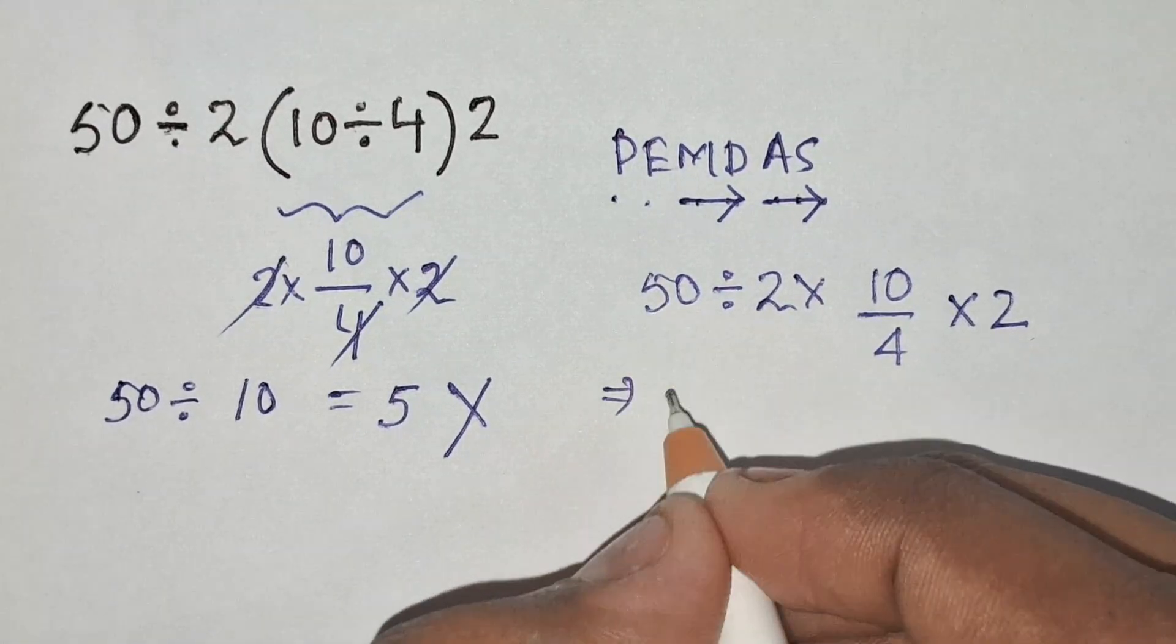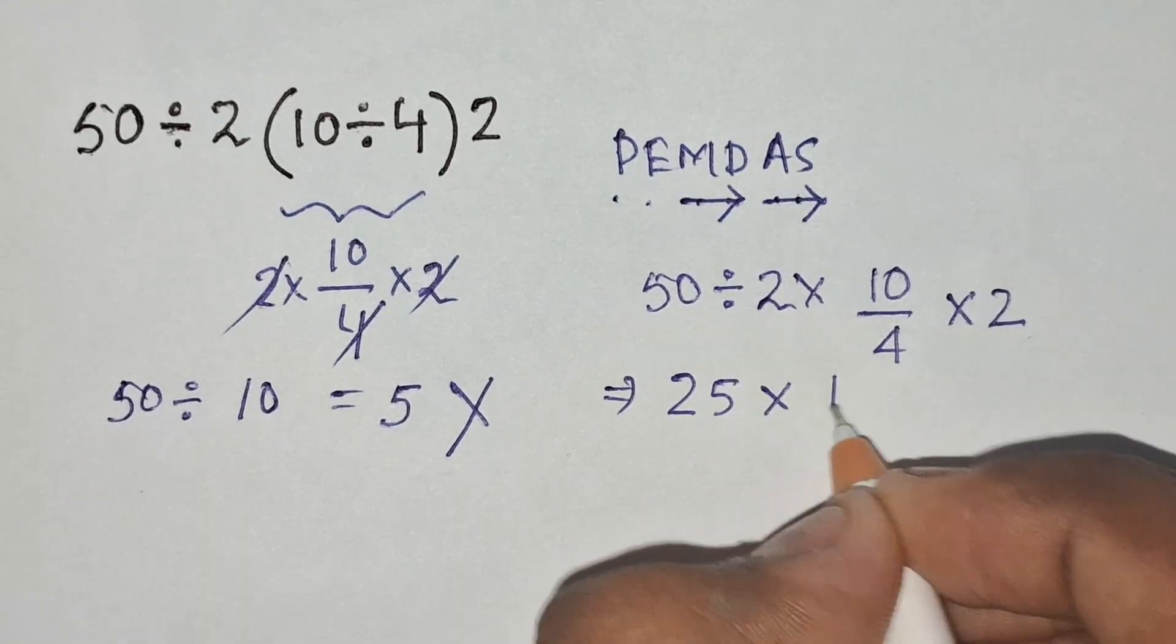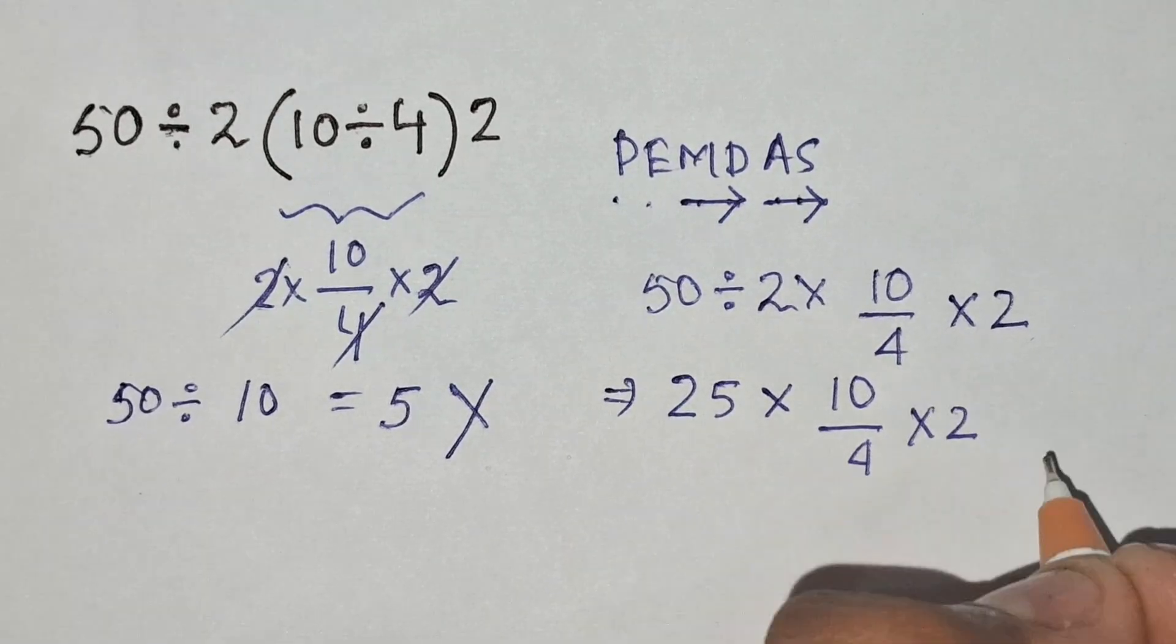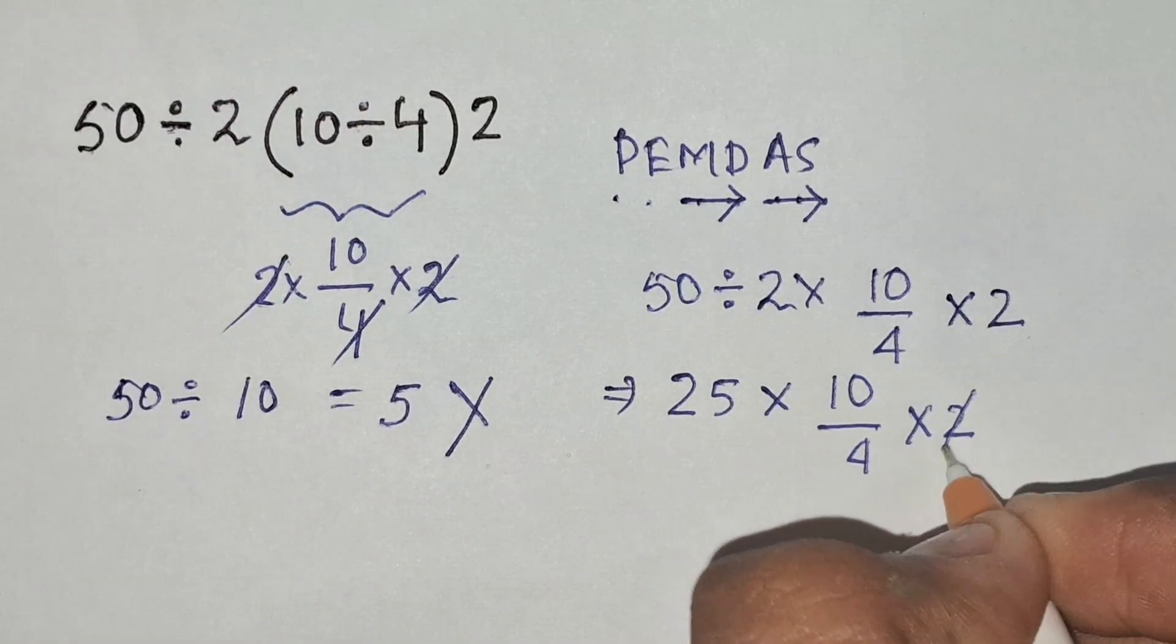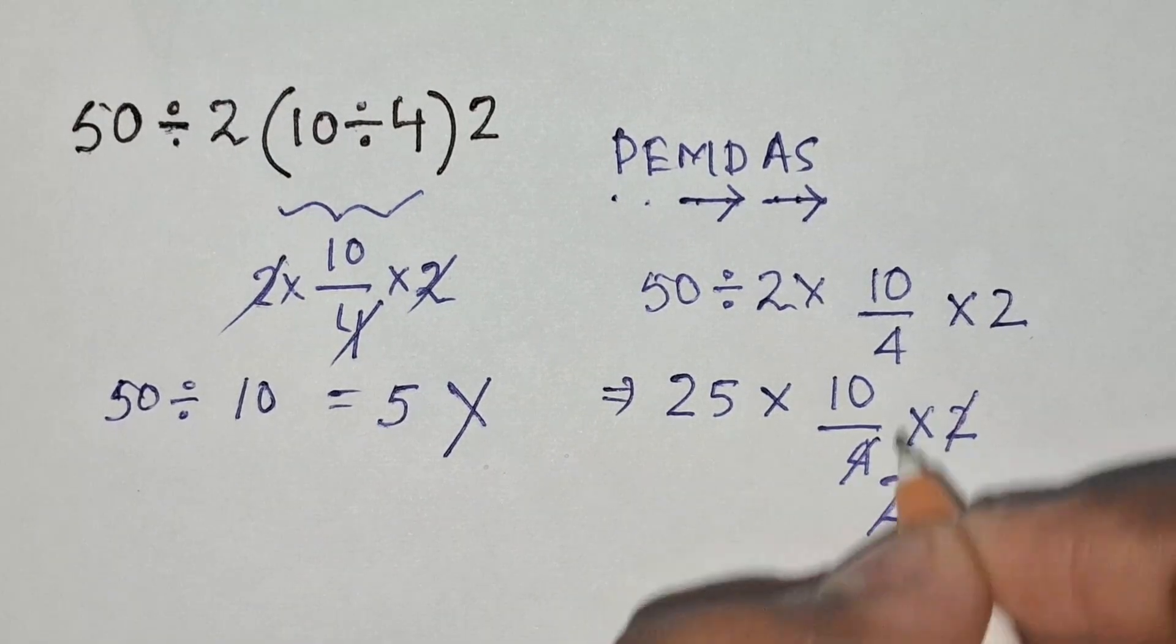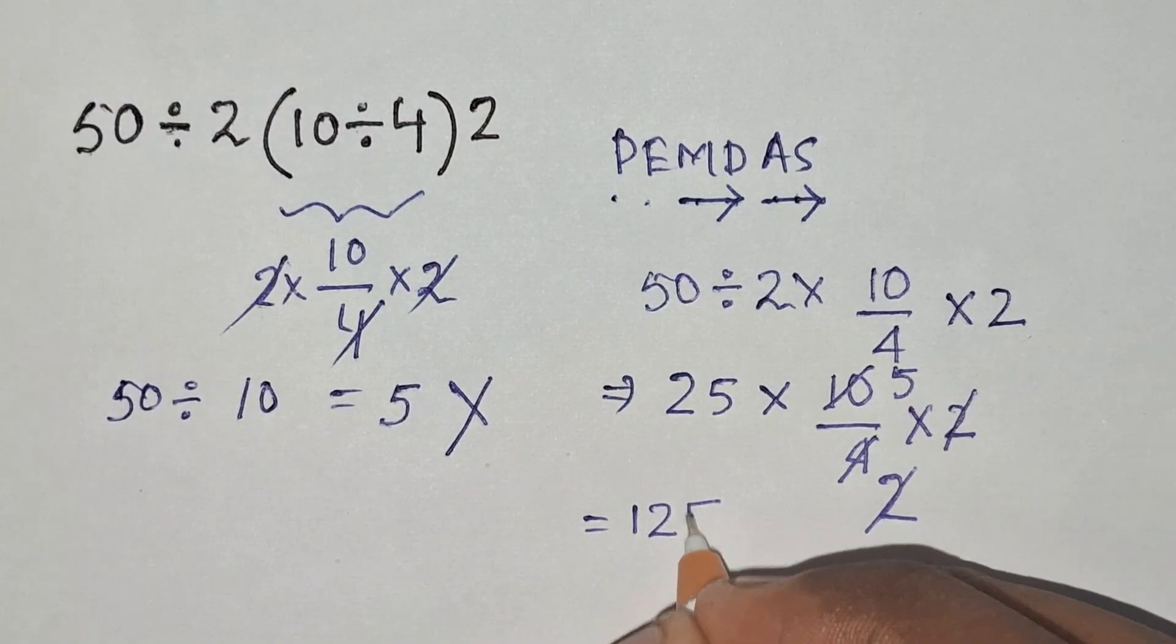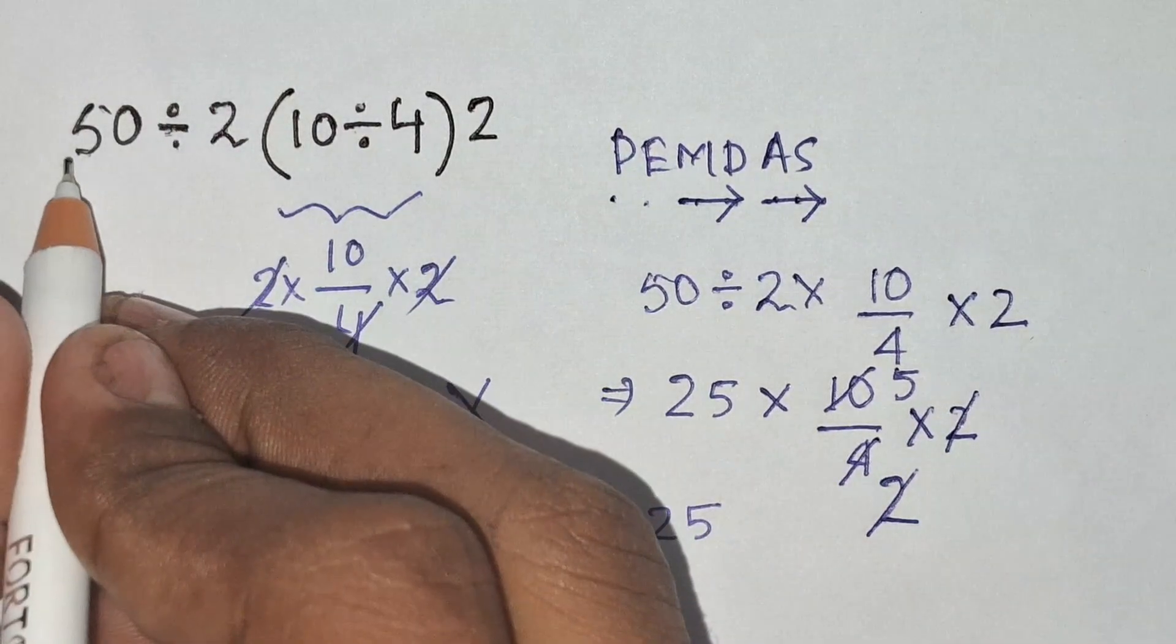So 50 divided by 2 equals 25 times 10 by 4 times 2. 2 and 4 cancel, so 2 and 2 and 10 cancels, so it becomes 5. 25 times 5 is equals to 125, is the final answer for the expression.